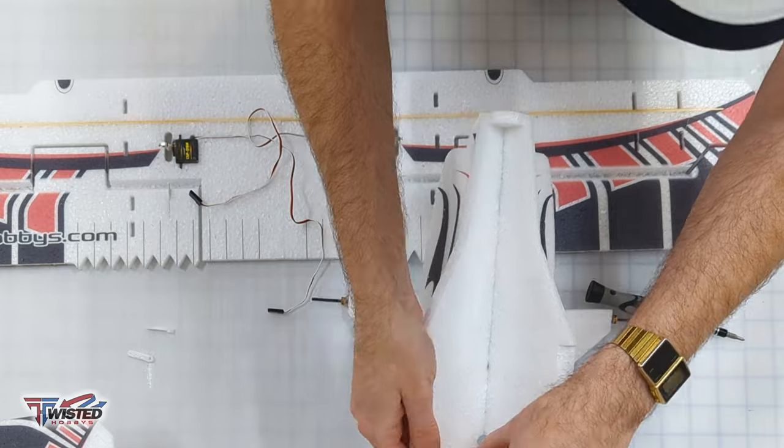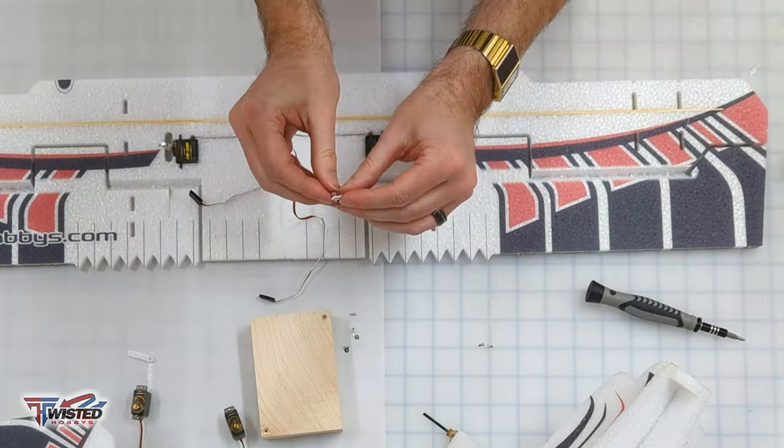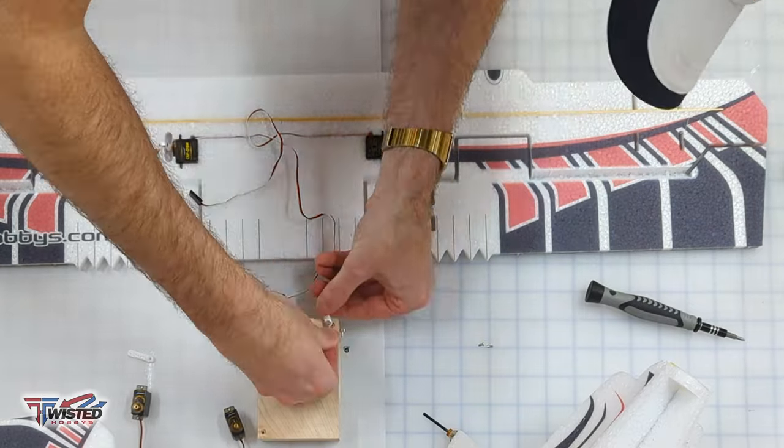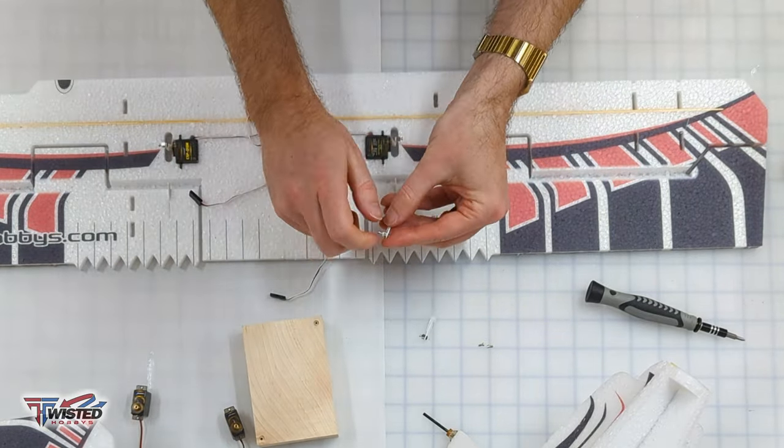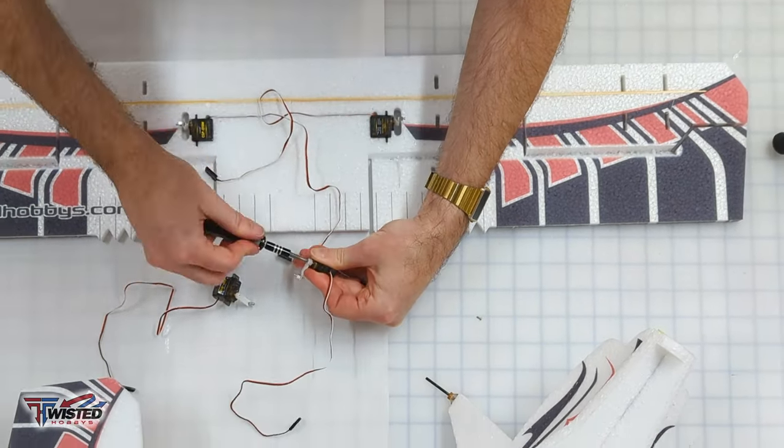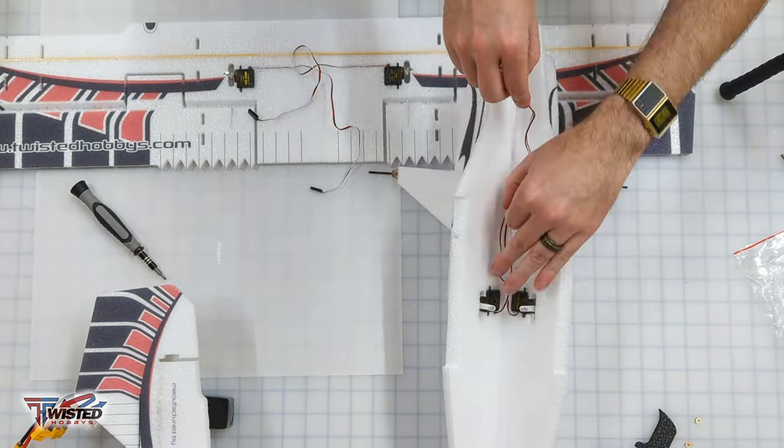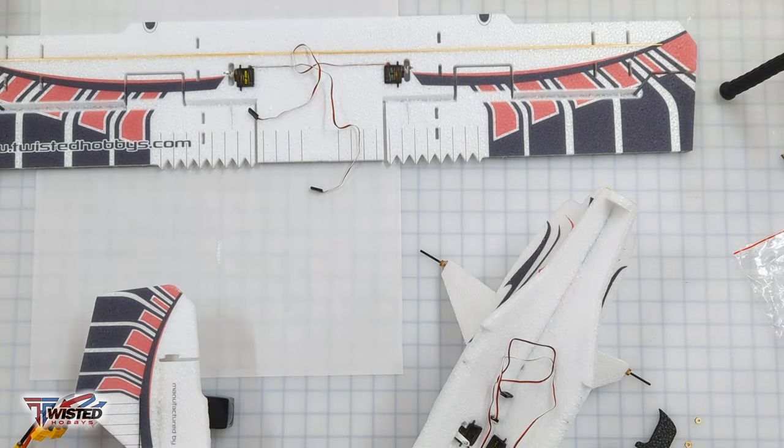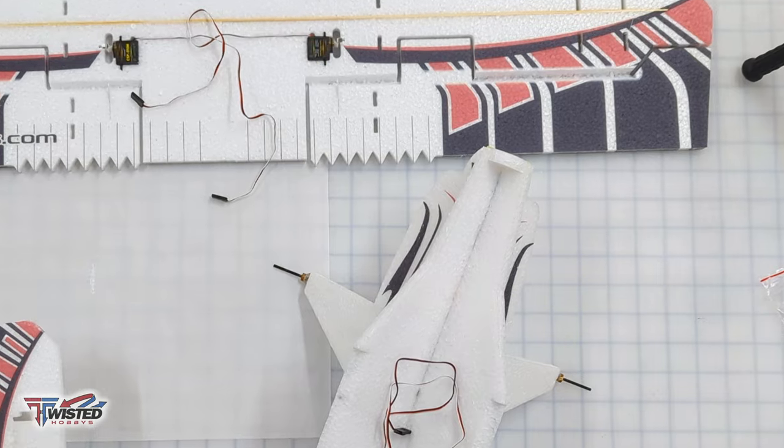Next we're going to dry fit the elevator and rudder servos but we're going to assemble them outside. Same thing with those end links, just pushing them through the servo horns and then screwing them onto the servos and then getting them installed. You want to make sure they're centered and in the right place beforehand because once you get them in the plane and the wing on top it's hard to access that area so you want to get that set up before you close it off.